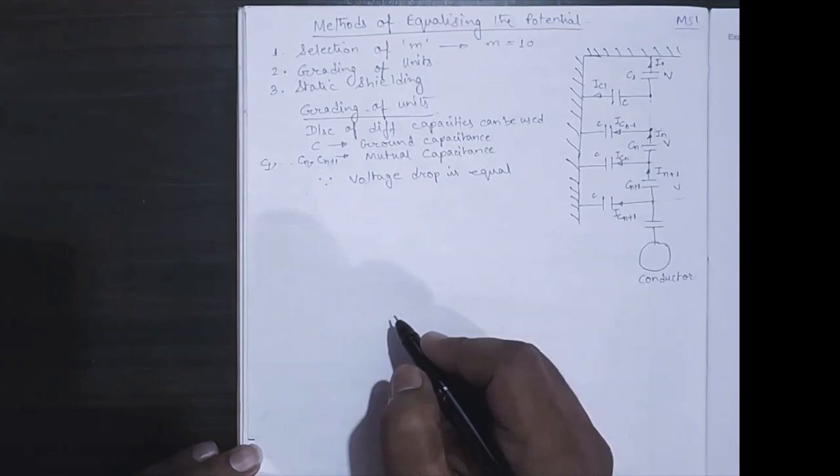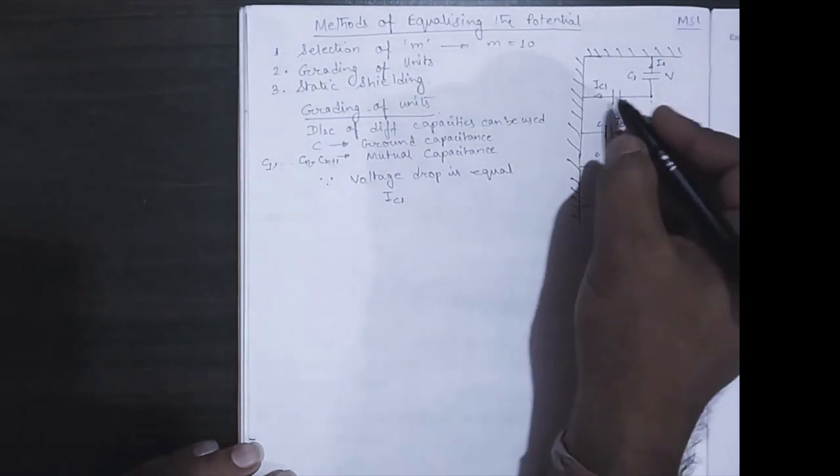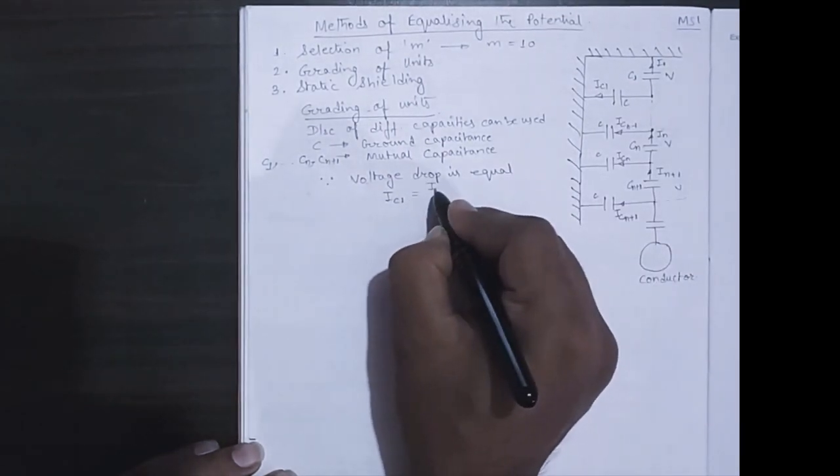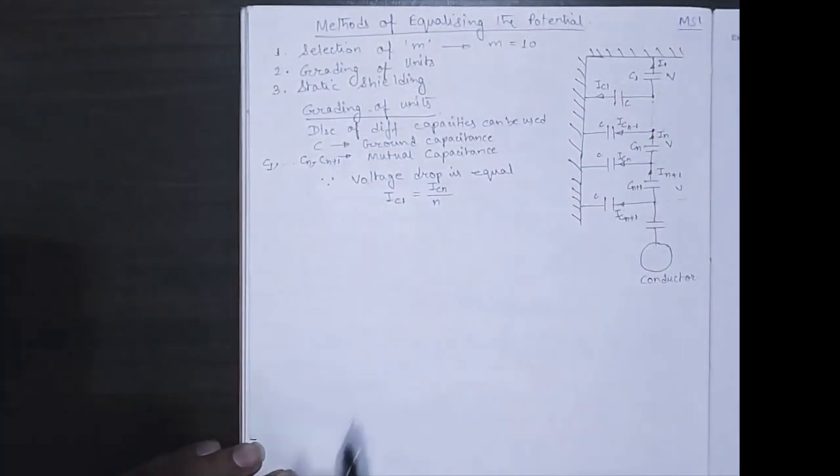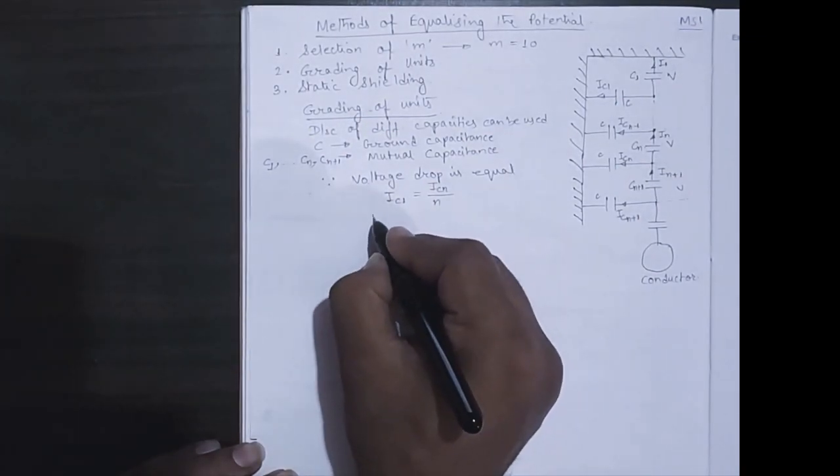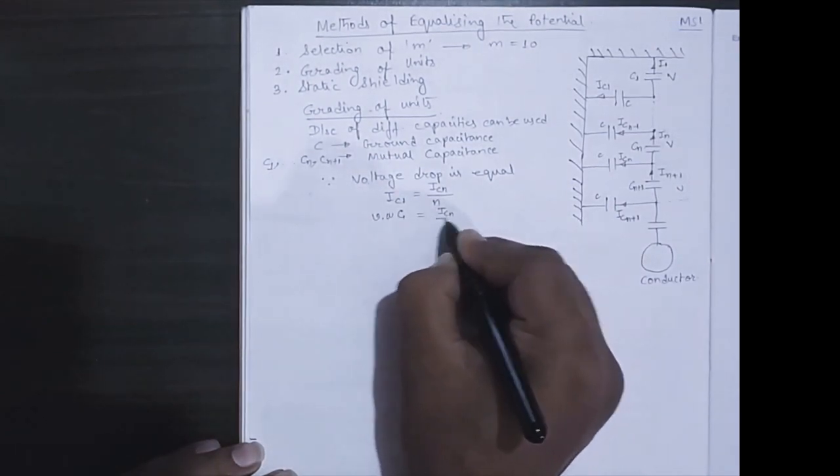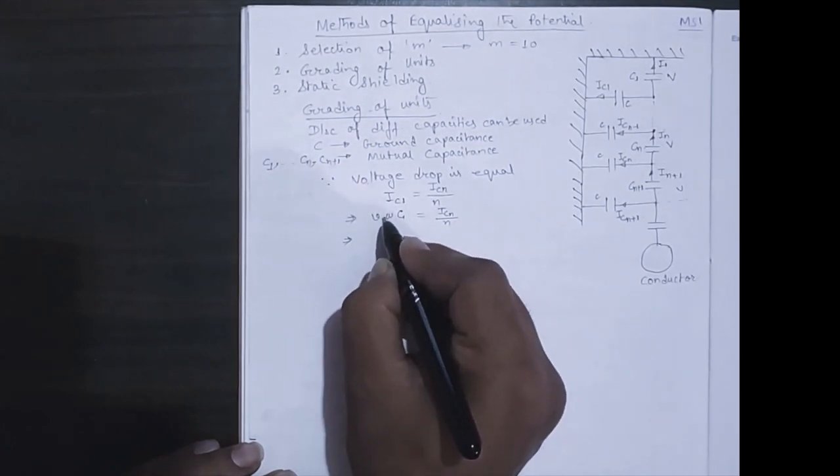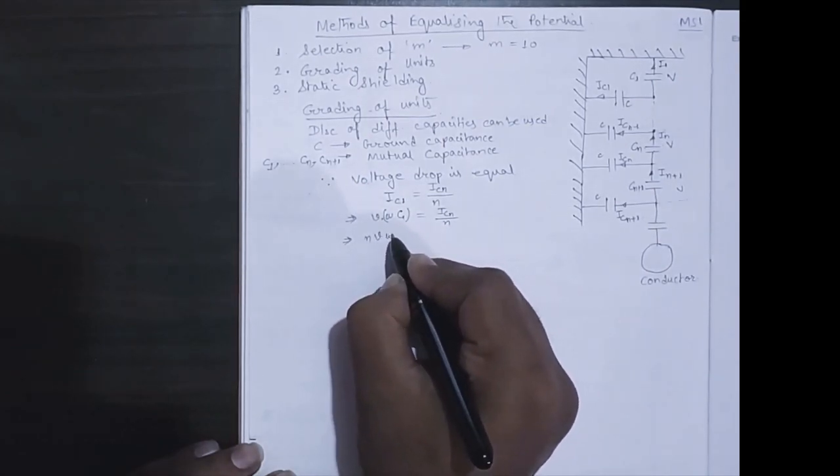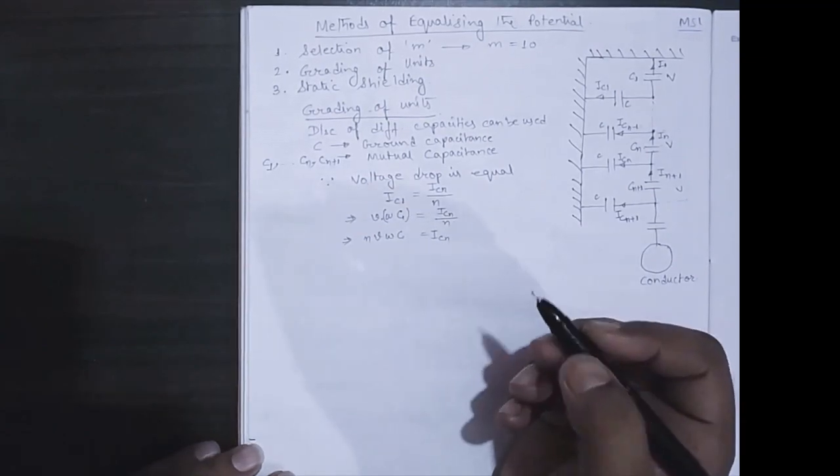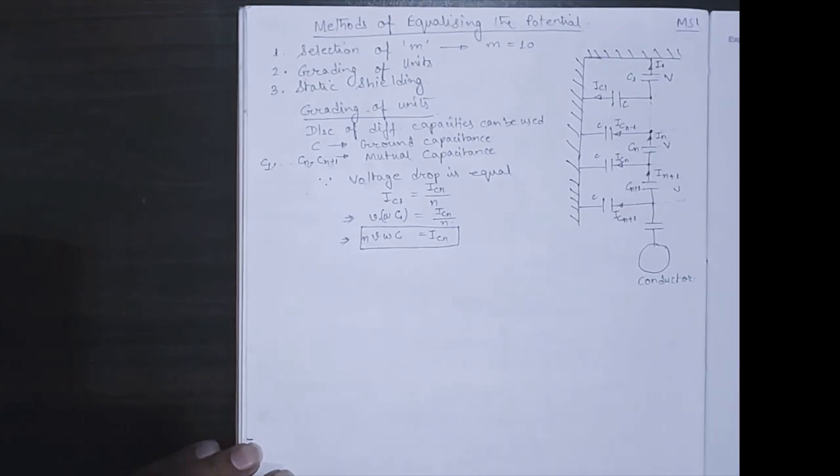Since voltage drop is equal between all insulator plates, the total current ic1 is equal to icn by n. We are taking that n number of capacitances are present, so total current is icn by n. Now ic1 can be written as v omega c. This is equal to icn by n. So icn can be written as n v omega c. This is equal to ic. This is important for this derivation.